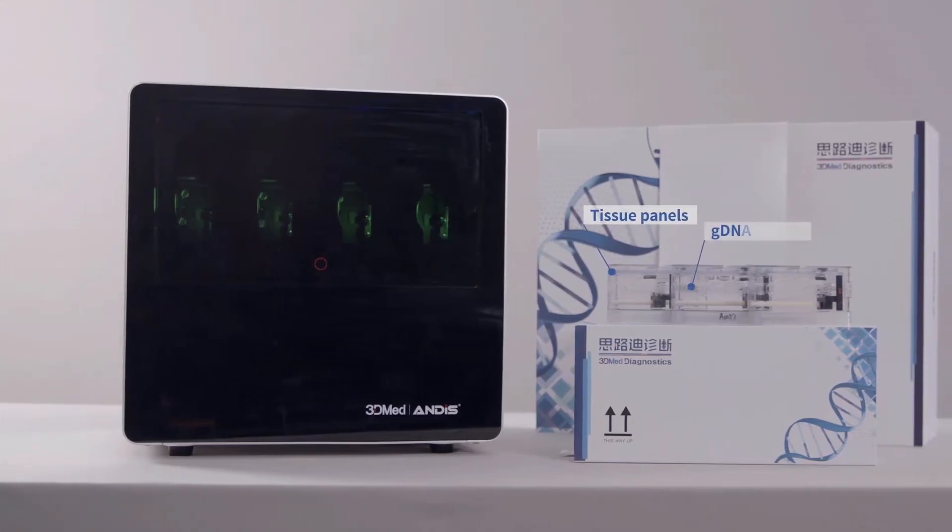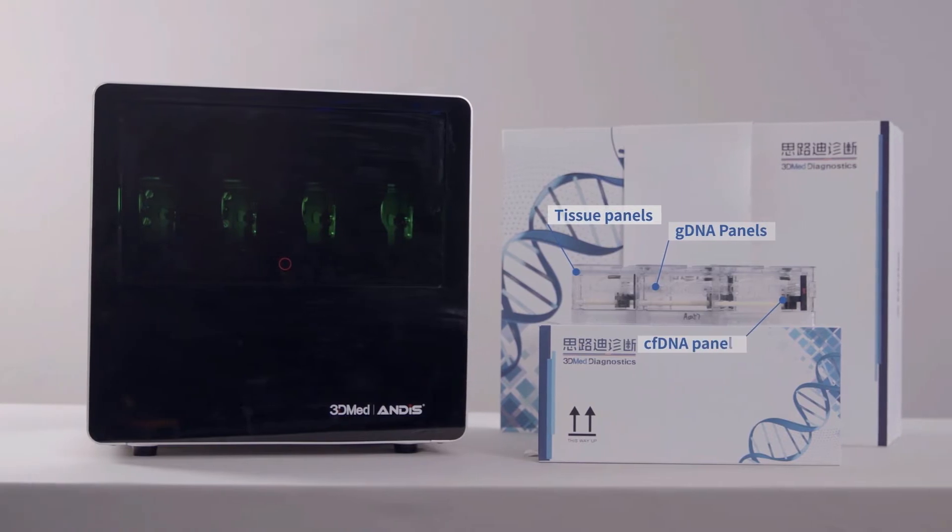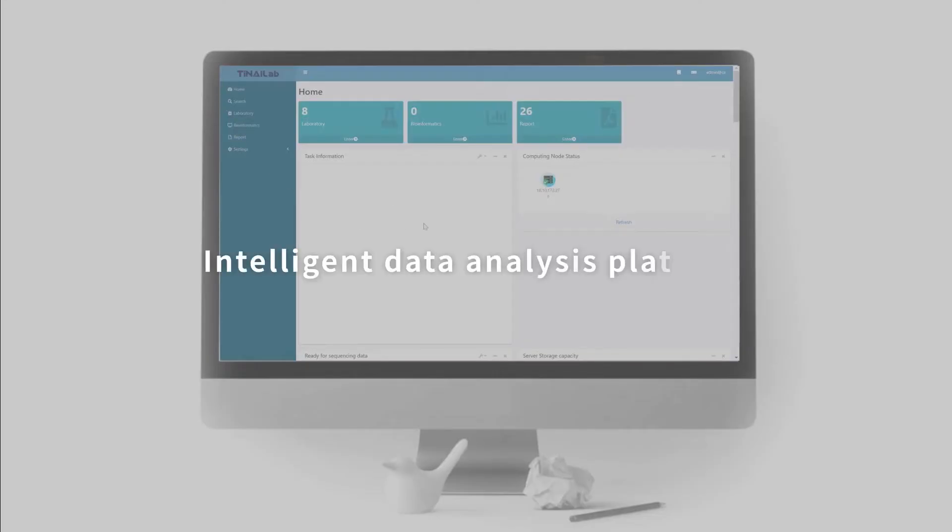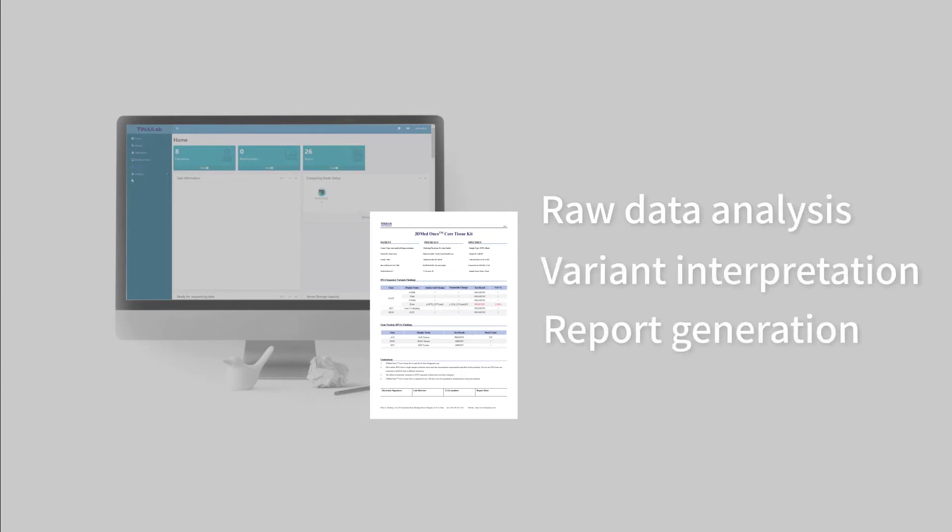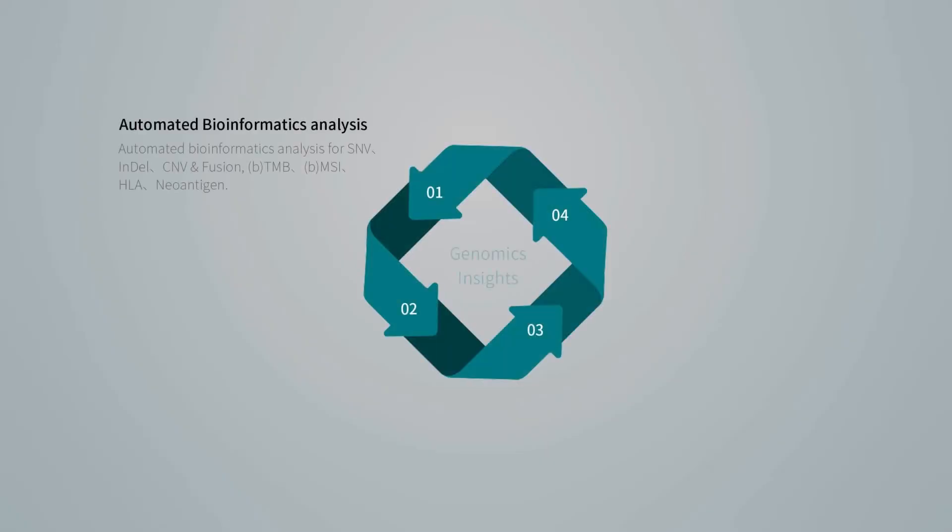3D MAD provides comprehensive cancer panels for solid tumors. TINA system is easy to use for sequencing raw data analysis, variant interpretation, and report generation. With just a few clicks, TINA system enables customers to benefit from 3D MAD NGS bioinformatics capability.